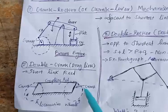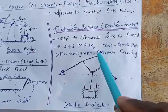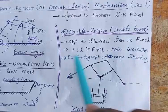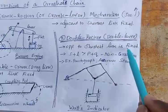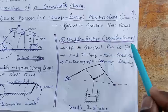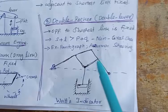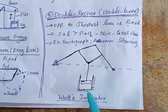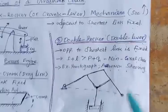The next type is the double rocker or double lever mechanism. Here the condition is S + L > P + Q — that is, shortest plus longest link length is greater than P + Q, which is the non-Grashof chain. Additionally, the link opposite to the shortest link is fixed. This gives the double rocker or double lever mechanism. Examples include Watt's indicator mechanism, pantograph mechanism, and Ackerman steering mechanism. In early steam engines, Watt used this arrangement to identify the pressure inside the cylinder.